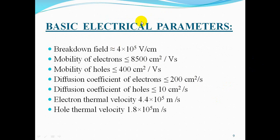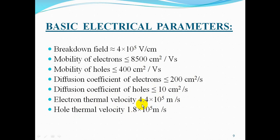The basic electrical parameters of gallium arsenide are: breakdown field 4×10⁵ V/cm; electron mobility ≤8500 cm²/V·s; hole mobility ≤400 cm²/V·s; electron diffusion coefficient ≤200 cm²/s; hole diffusion coefficient ≤10 cm²/s; electron thermal velocity 4.4×10⁵ m/s; and hole thermal velocity 1.8×10⁵ m/s.